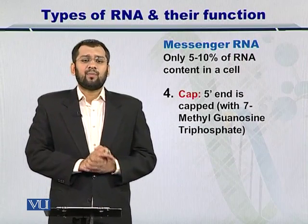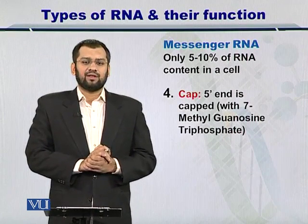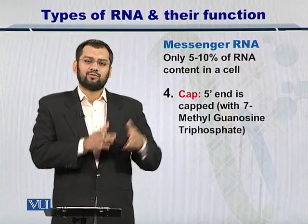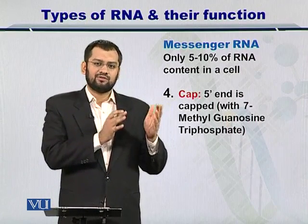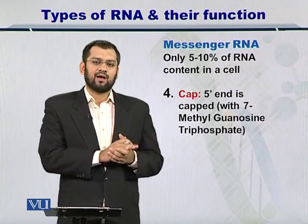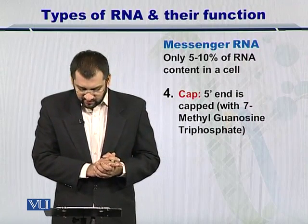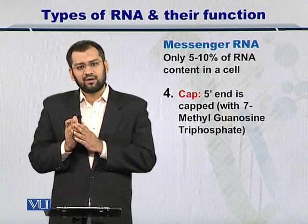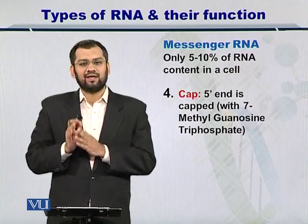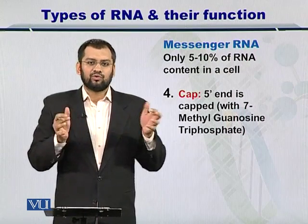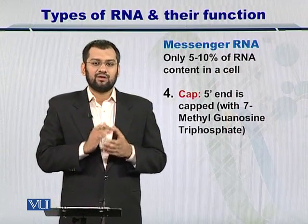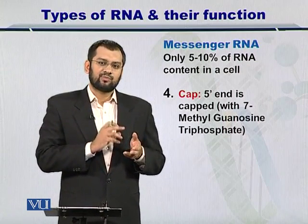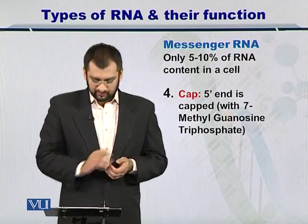There are some other important characteristics of mRNA that you should know. The first is that the five prime end of the RNA is capped — it is capped by a molecule called 7-methylguanosine triphosphate. The three prime end is also capped by a poly-A tail. Both of these caps play very specific roles in helping transport the mRNA to the ribosomes.